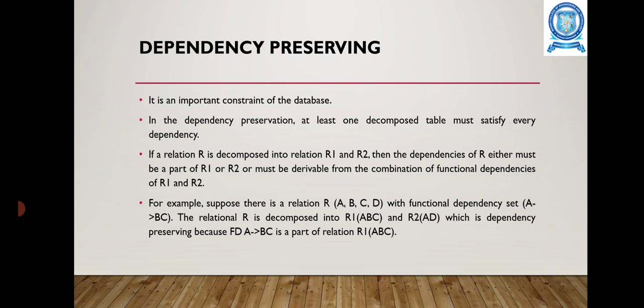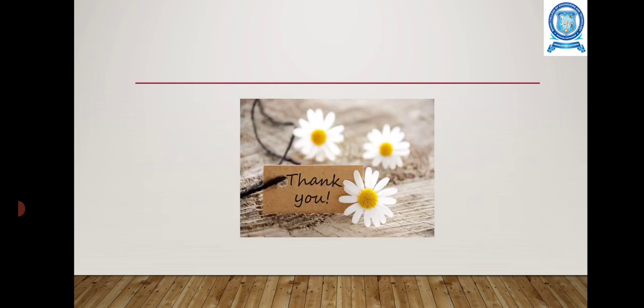This is how the 3rd Normal Form is obtained. Next is dependency preservation, which is also an important constraint in the database. In dependency preservation, at least one decomposed table must satisfy every dependency. If a relation R is decomposed into R1 and R2, then dependencies of R must either be a part of R1 or R2, or must be derivable from the combination of functional dependencies of R1 and R2. For example, suppose there is a relation R with attributes A, B, C, D and the functional dependency A → BC. The relation R is decomposed into R1(A, B, C) and R2(A, D), which is dependency preserving because the functional dependency A → BC is part of R1(A, B, C).